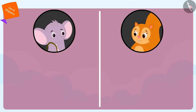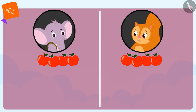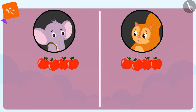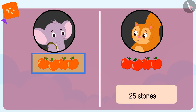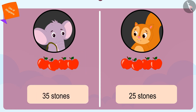Both of them bought four apples. Yet, how can the weight of Chanda's apples be equal to 25 stones while Appu's four apples weigh 35 stones?